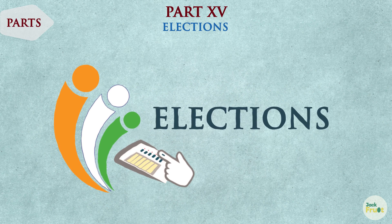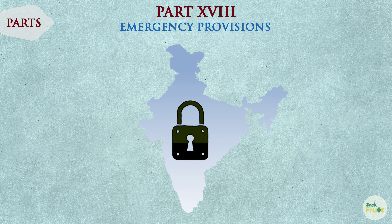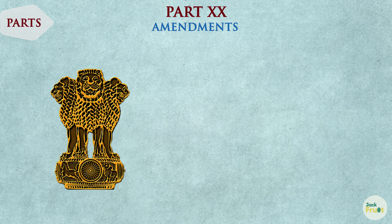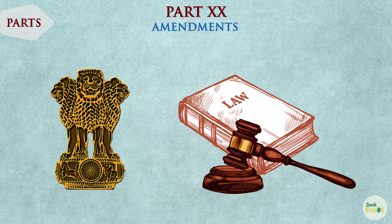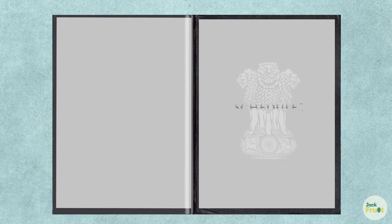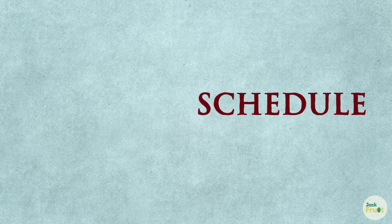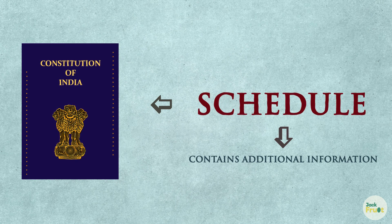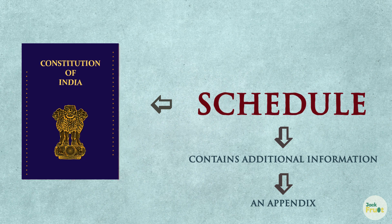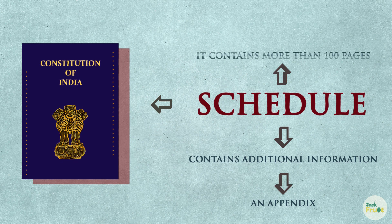Elections are dealt with in Part 15 and emergency provisions are dealt with in Part 18 of the Indian Constitution. Part 20 of the Indian Constitution describes the procedures for amending the Constitution. After the parts of our Constitution, we have schedules. A schedule is a part of an enactment that contains additional information that has not been mentioned in the body of the legislative document. Schedules are an appendix attached to enactments.